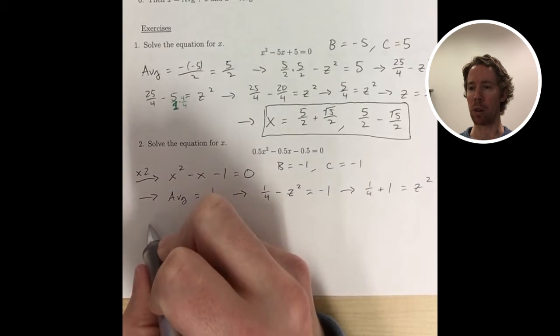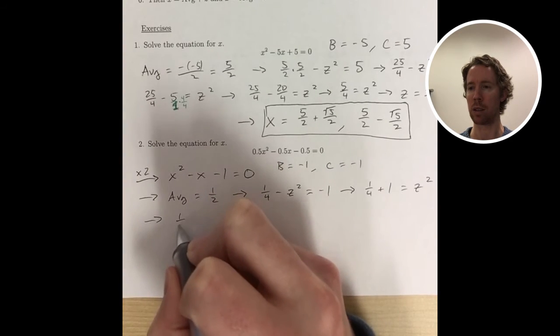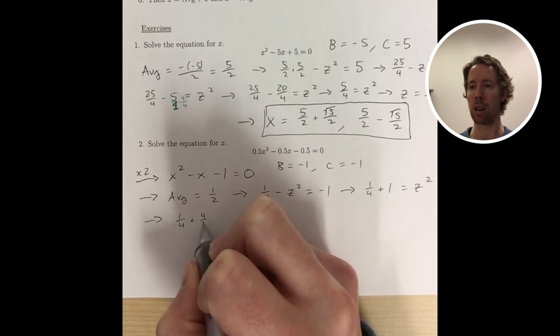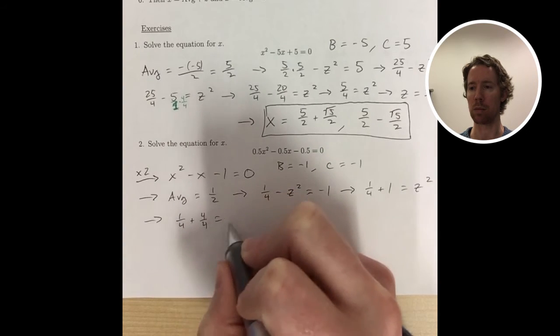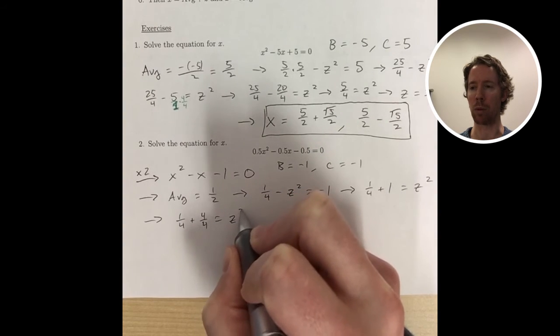Add z squared to both sides, add 1 to both sides. Turn 1 into fourths, so it becomes 4 fourths.